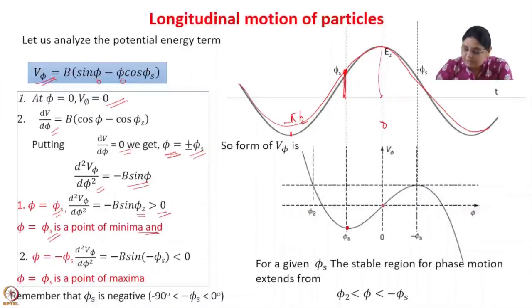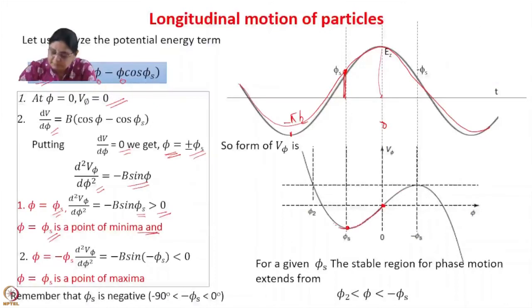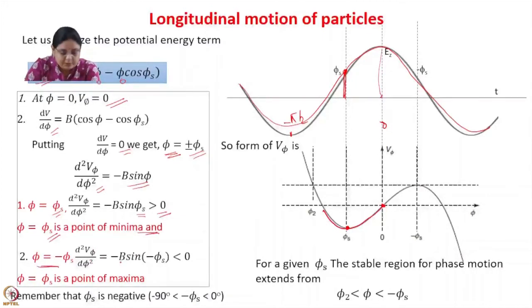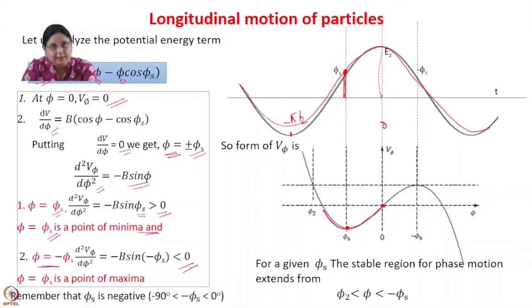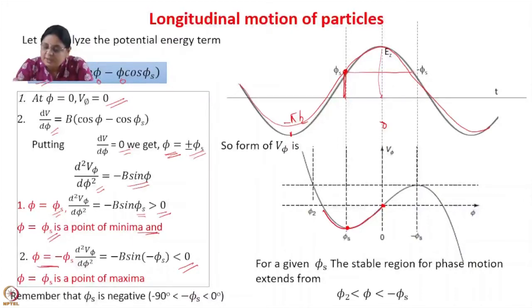The potential is 0 at phi equal to 0, and at phi equal to phi_s we have a minima. Next, at phi equal to minus phi_s, d²V(phi)/d(phi)² equals minus b sin(minus phi_s). Since phi_s is a negative number, this turns out to be less than 0. So this is a maxima at phi equal to minus phi_s.